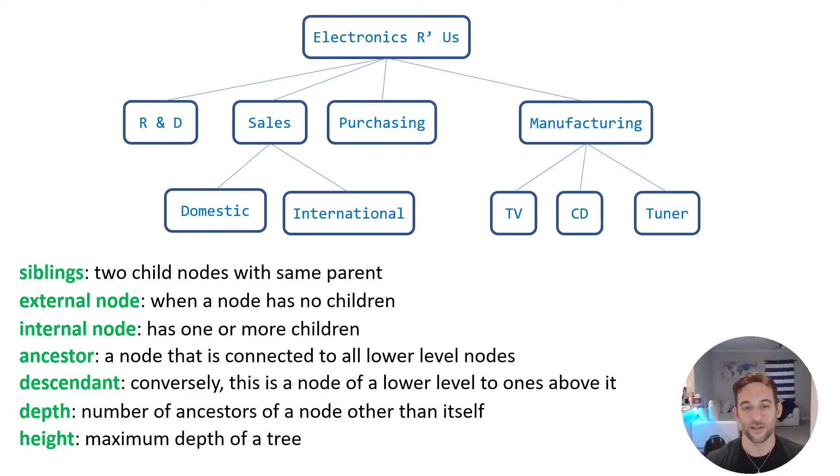Now if you look at an external node, this is when a node has zero children. So domestic, international, TV, CD, and tuner are all external nodes because there are no children nodes. Now on the flip side, internal nodes have at least one child, so they can have one or more children. So sales is an internal node because it has two children. Manufacturing is an internal node because it has at least one child node, it has three actually. And likewise, R and D and purchasing are also external nodes because they have zero children.